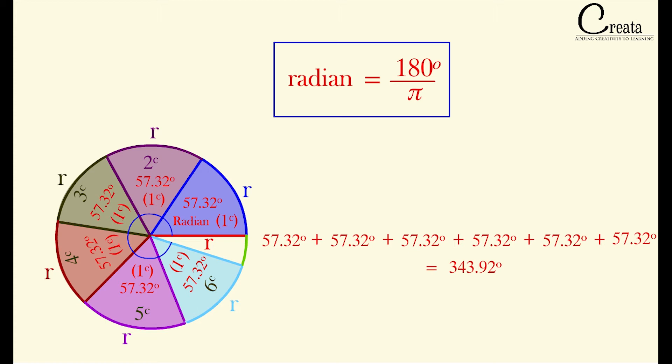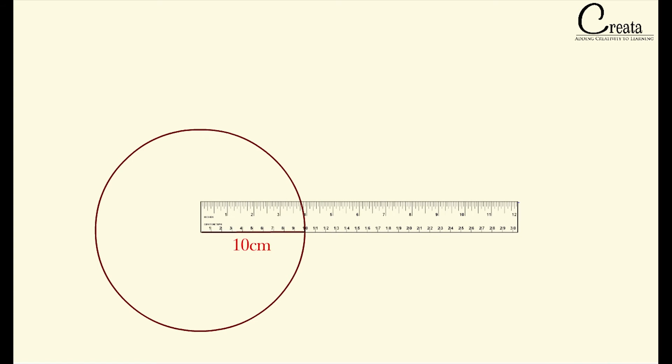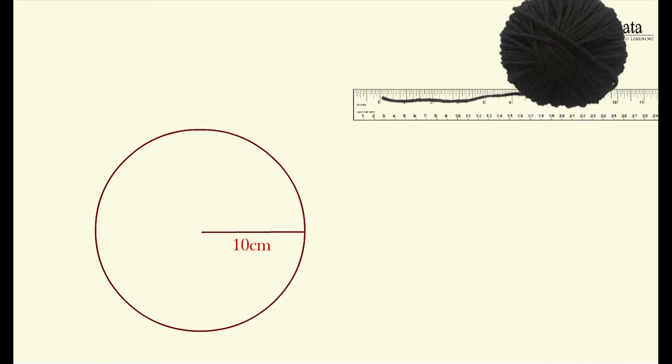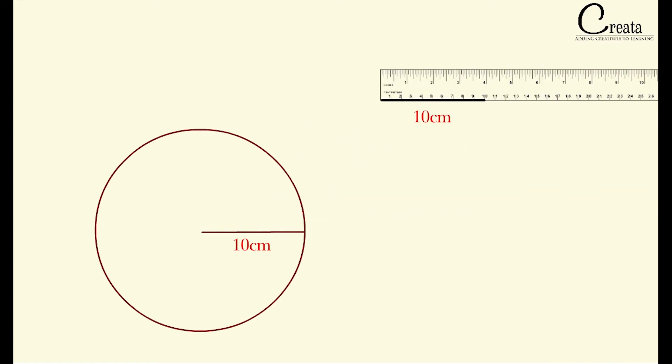For better learning, you can do a small experiment. Just draw a random circle of radius say around 10 cm. Take a thread of 10 cm that is equal to radius of a circle and use this thread as arc on circumference for that circle. Join the end point of the arc with center of the circle and measure the angle between these two radius.